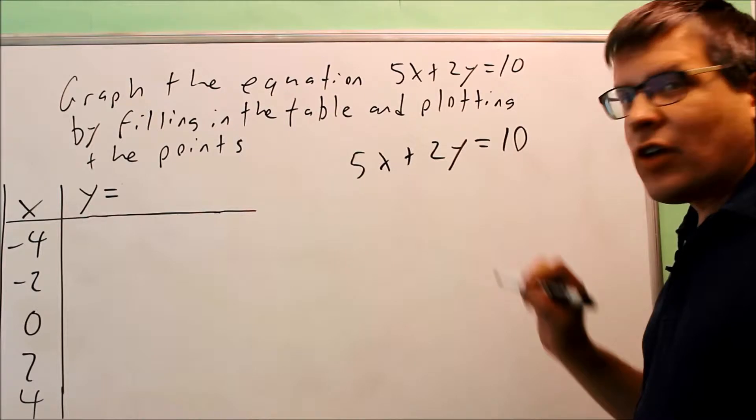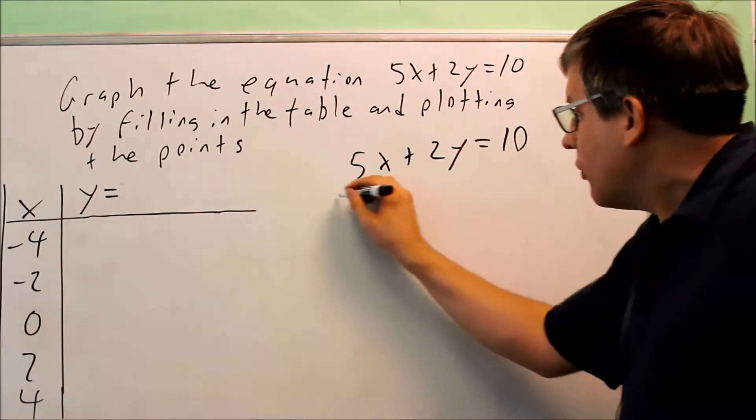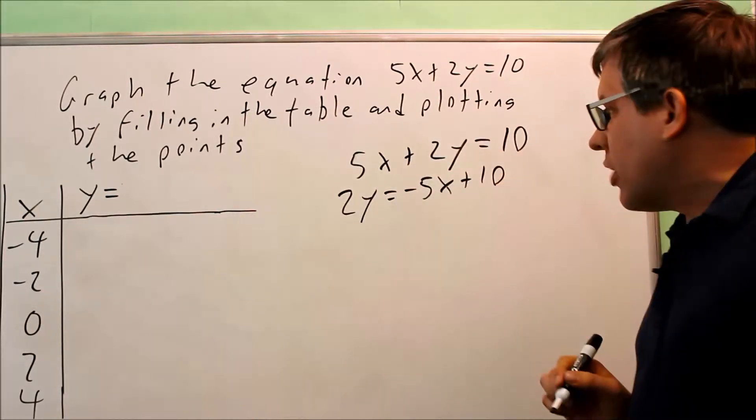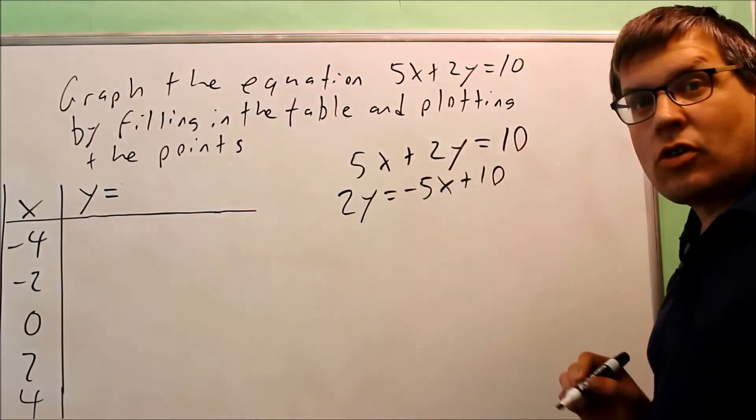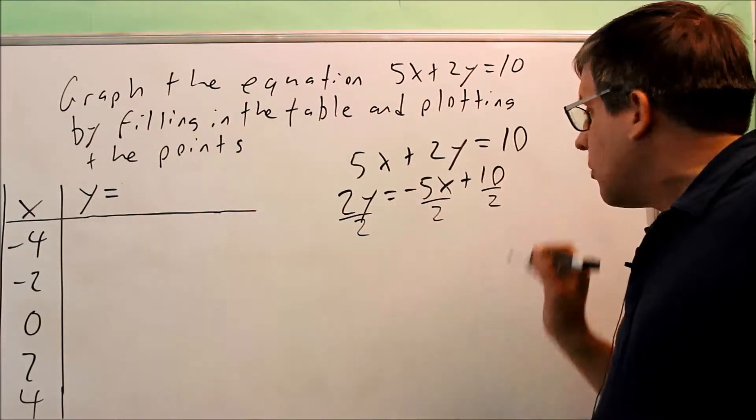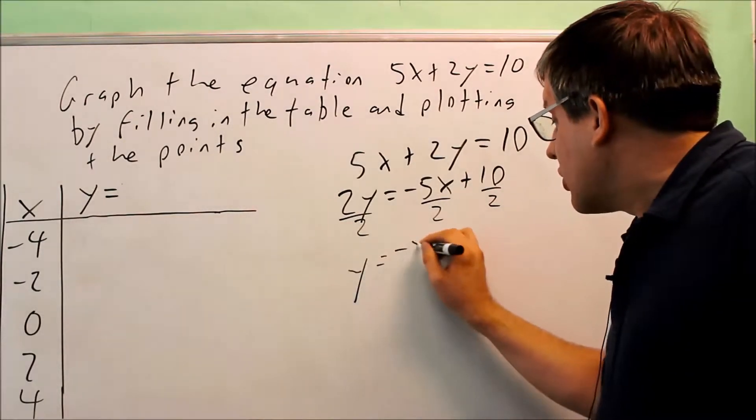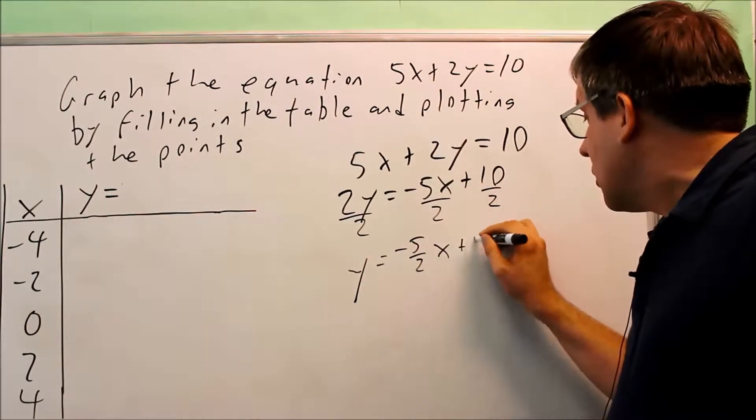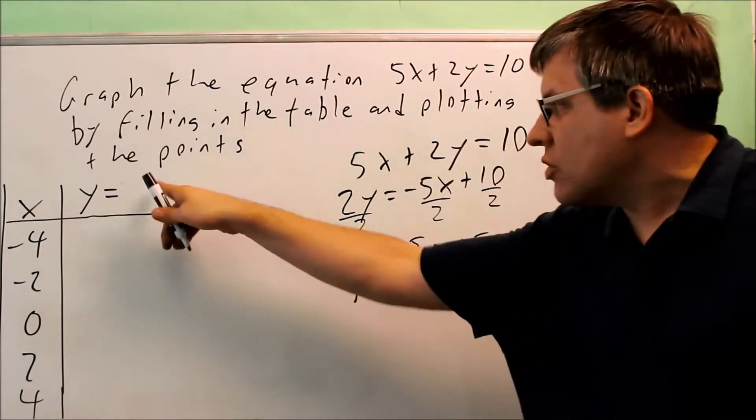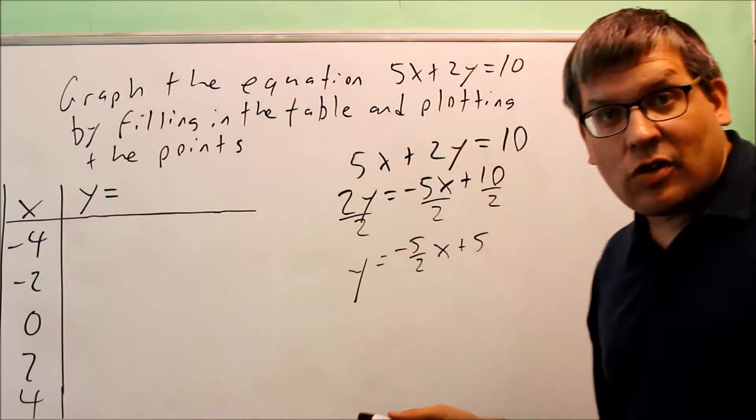To do this, we're going to move the 5x across the equal sign and when you do, it becomes negative. 2y equals negative 5x plus 10. It's negative because you move it across the equal sign. Now you're going to divide everything by 2. Both sides you divide by 2. Y equals negative 5 halves x plus 5. So now this is the equation that we're going to use here in our table and that's the one that we're going to be putting all these x values into.